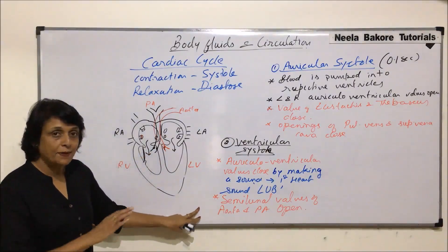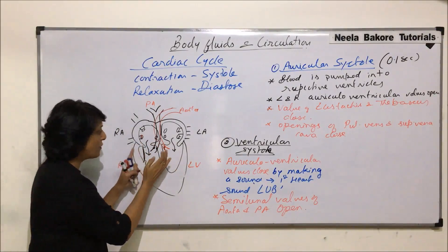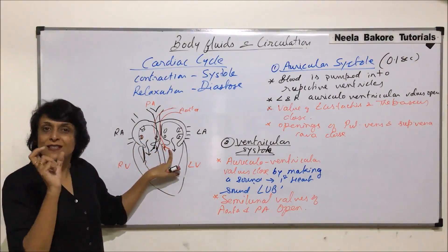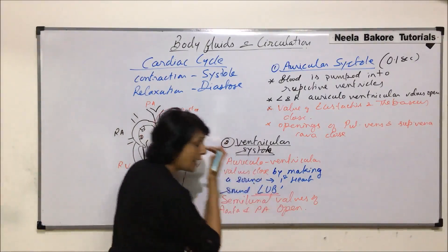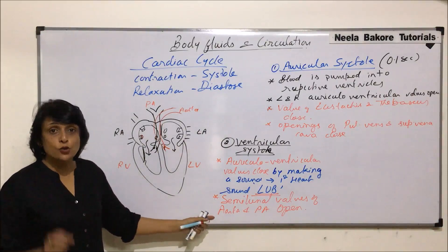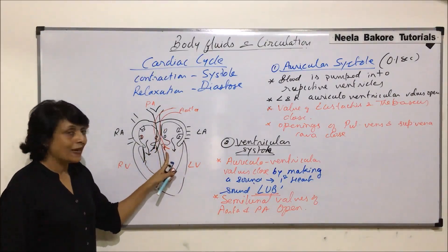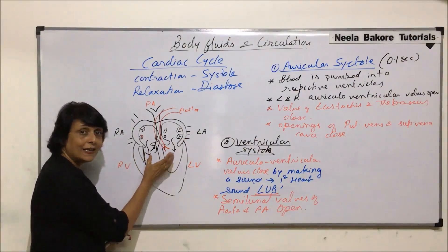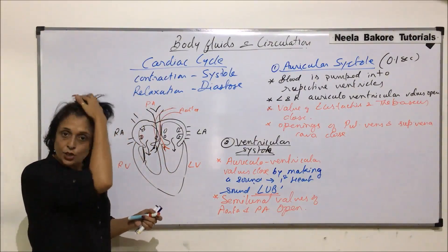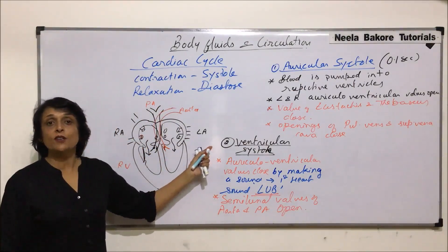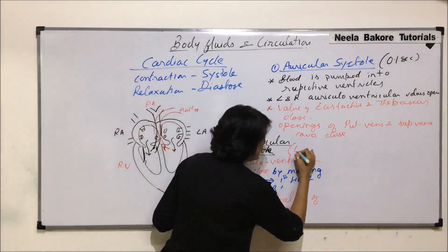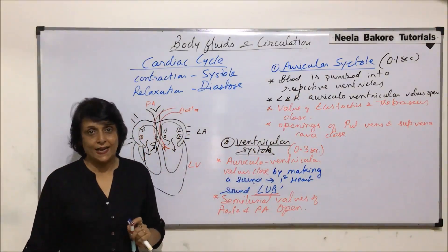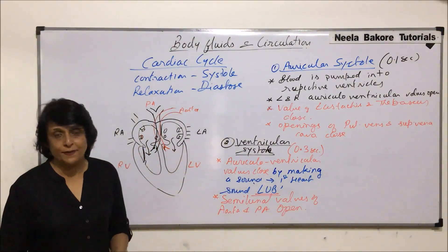To summarize ventricular systole: the auriculoventricular valves close to prevent blood flowing back into the auricles, and their closure produces the first heart sound. Then the semilunar valves of the aorta and pulmonary artery open so blood flows into the main arteries. The duration of auricular systole is 0.1 seconds, and ventricular systole is 0.3 seconds. Next we will discuss what happens in the following part of the cycle.